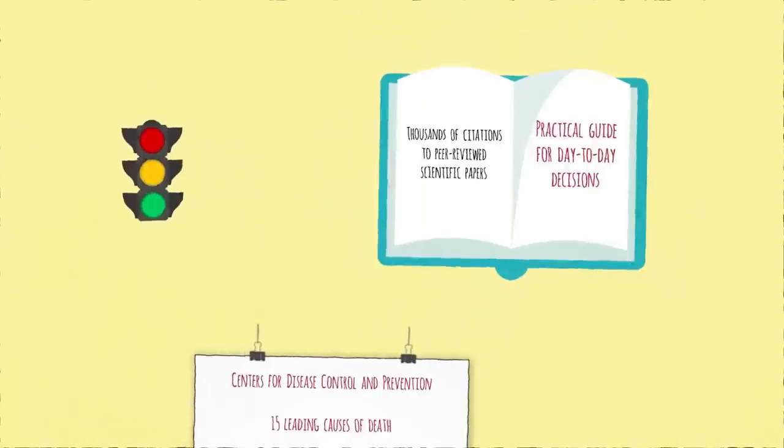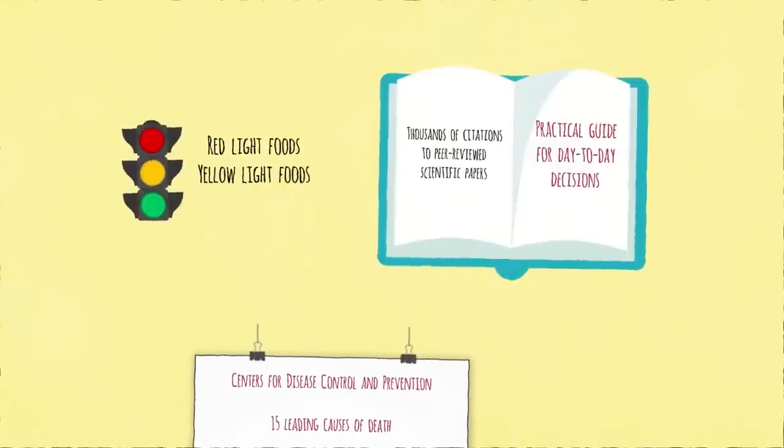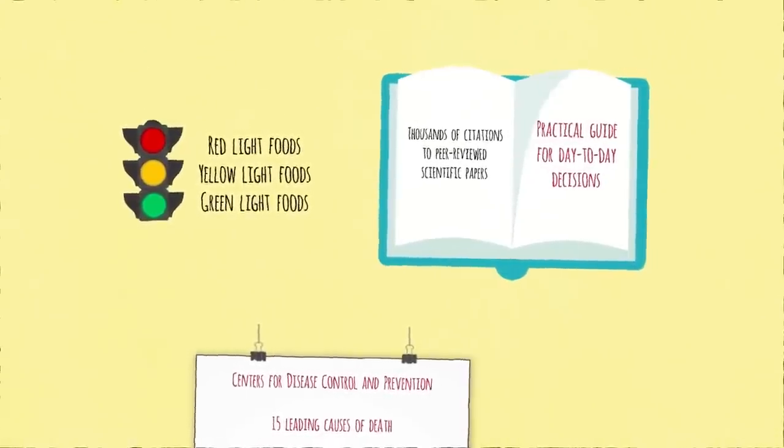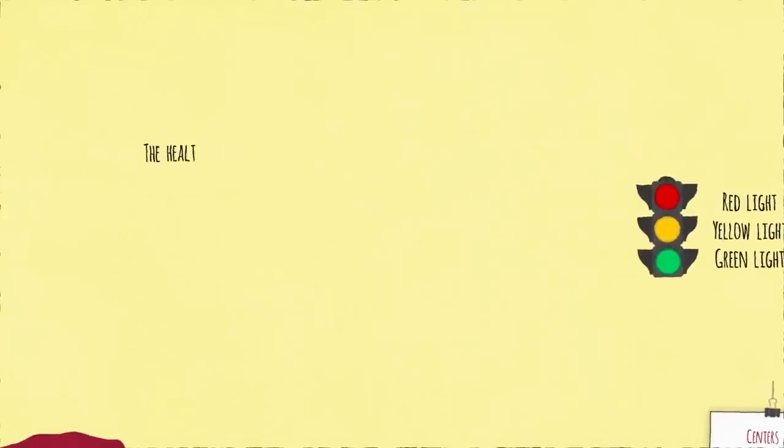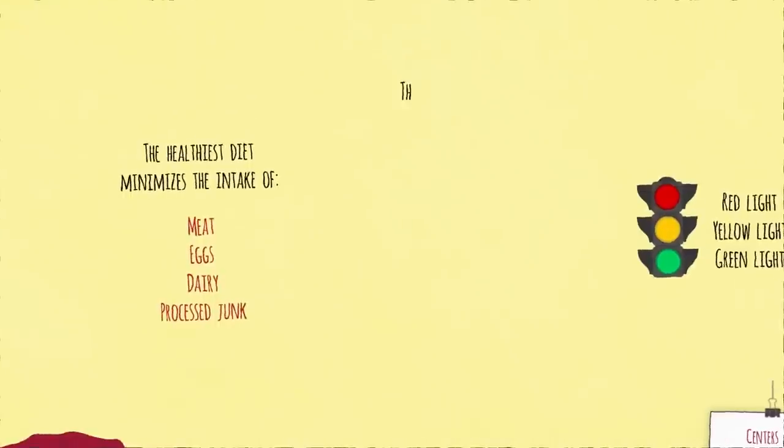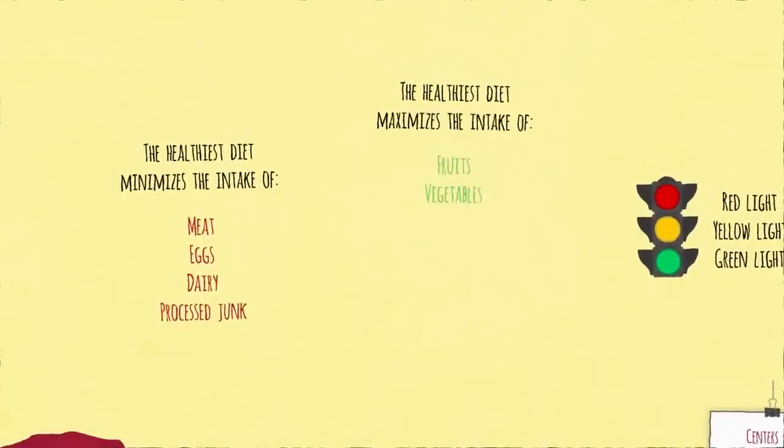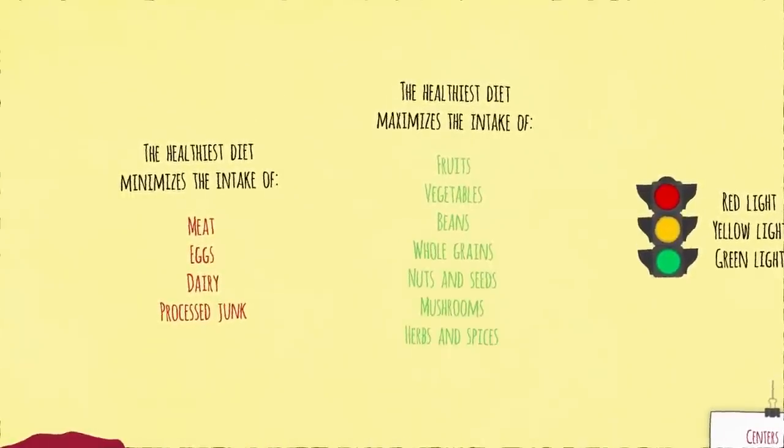First, I started out with a traffic light system to classify everything into red light, yellow light, and green light foods, though there are exceptions I talk about. The best available balance of evidence suggests the healthiest diet is one that minimizes the intake of meat, eggs, dairy, and processed junk and maximizes the intake of fruits, vegetables, beans, which are split peas, chickpeas, lentils, legumes in general, whole grains, nuts and seeds, mushrooms, herbs and spices, basically real food that grows out of the ground. These are our healthiest choices.